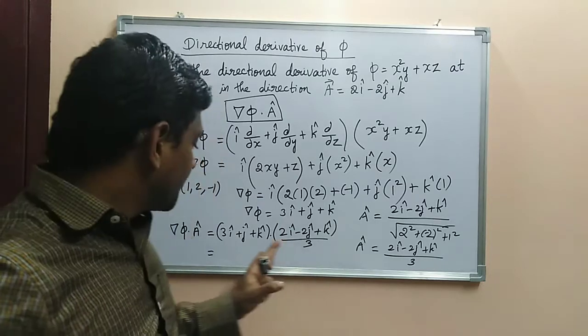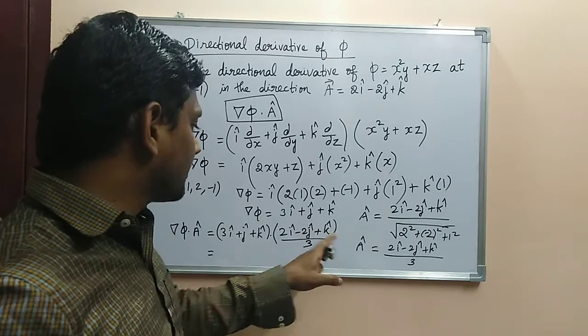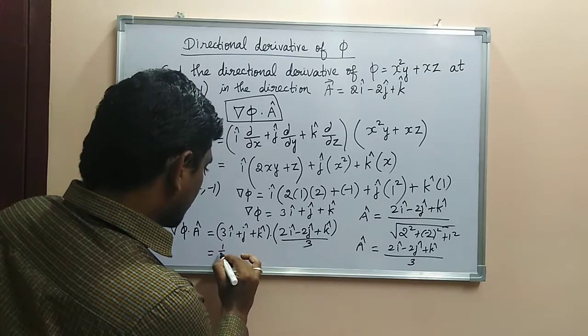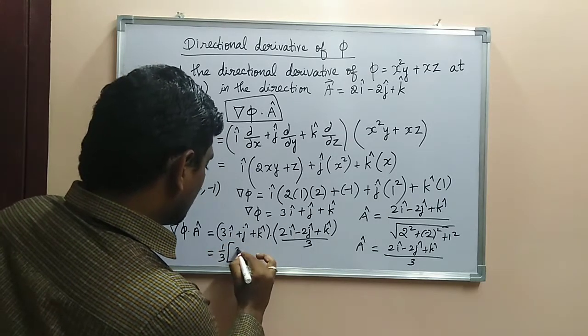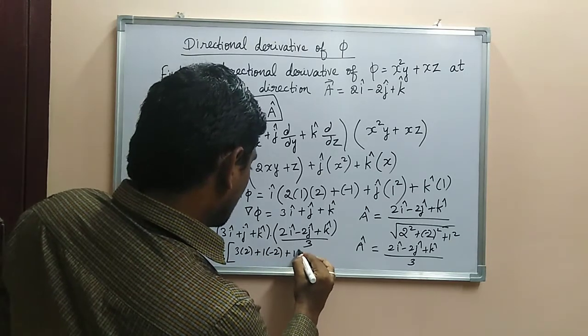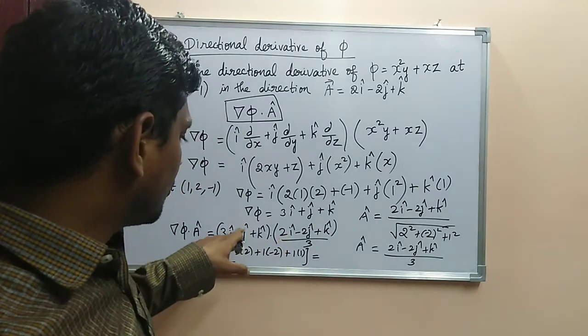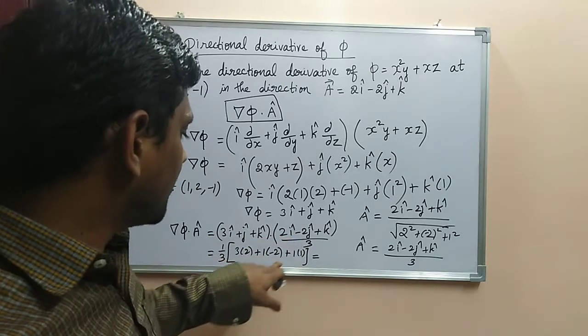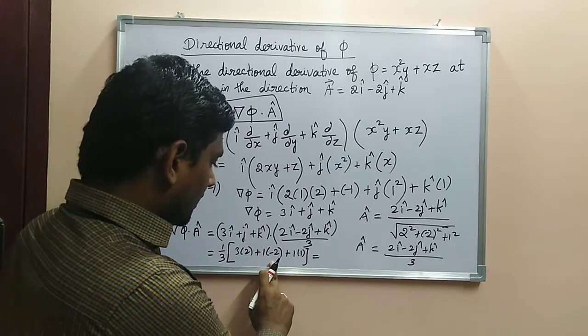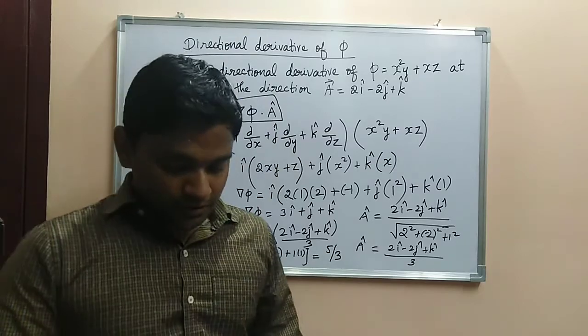So while taking the dot product, you need to just multiply the i cap components separately, j cap components separately, and k cap components separately. So when you multiply, 1/3 you can take as common: (3·2 + 1·(-2) + 1·1). That is 6 - 2 + 1 = 5, so 5/3. This is the answer for this problem.